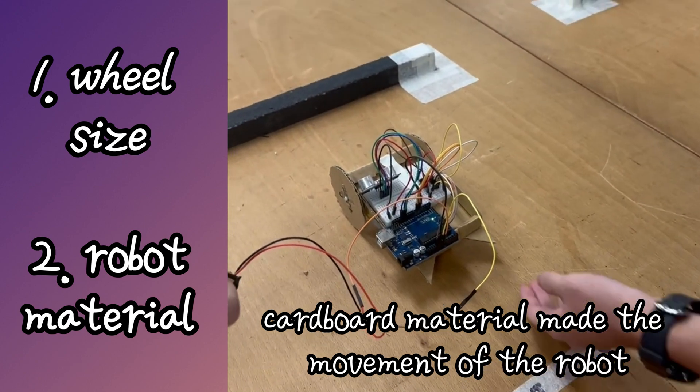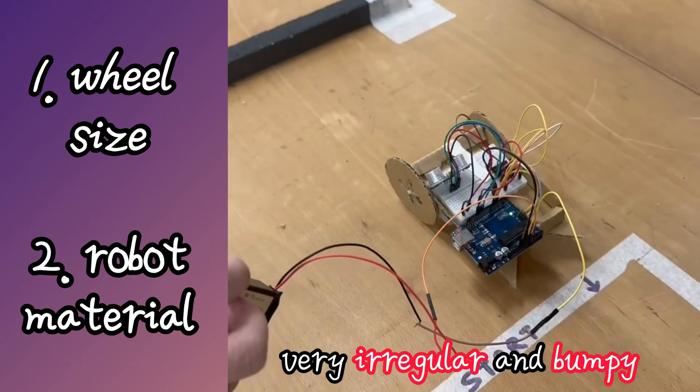Secondly, the cardboard material made the movement of the robot very irregular and bumpy.